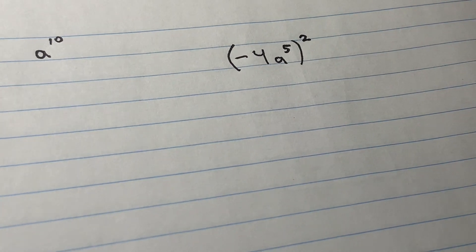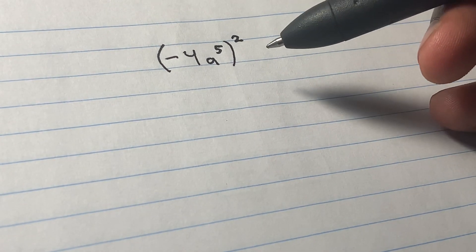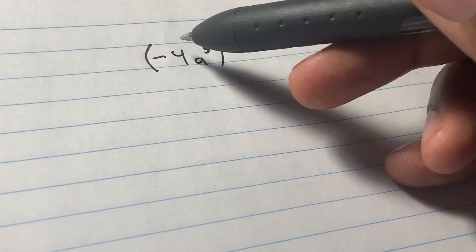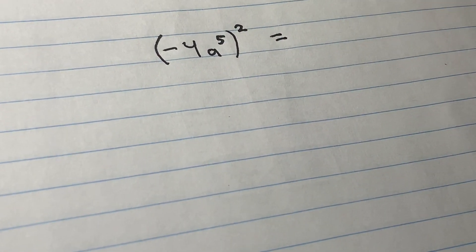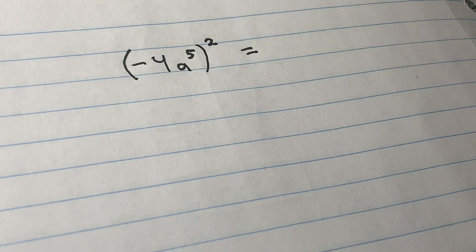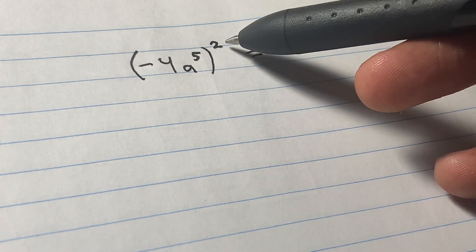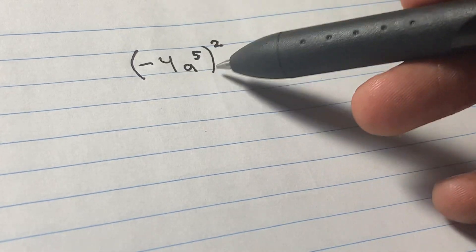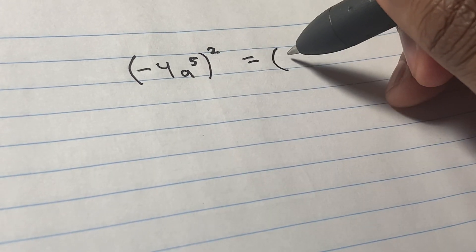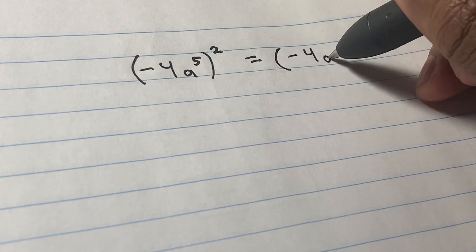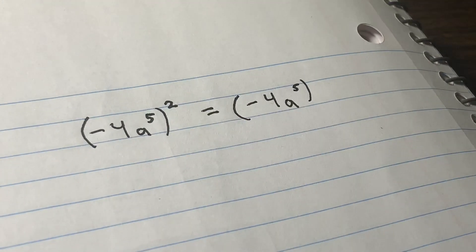There's another way to work out this problem — in math it's always good to know more than one way to solve a problem so you can check your answer. I can take this entire thing in parentheses and just rewrite it twice, because the exponent tells me to multiply the base by itself two times. The base in this situation is this entire thing: negative four a to the fifth power, written twice.